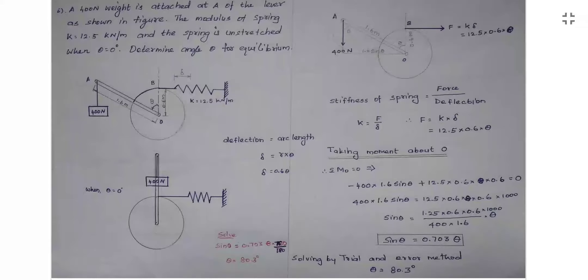A 400 N weight is attached at a lever as shown in the figure. The modulus of the spring is 12.5 kN per meter. The spring is unstretched when θ is equal to 0. Determine the angle θ for equilibrium.